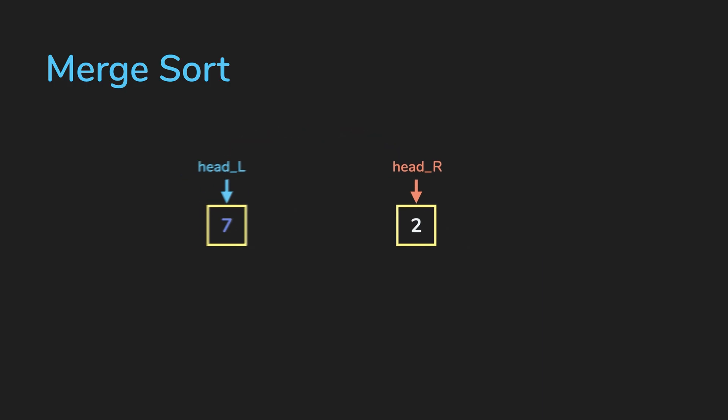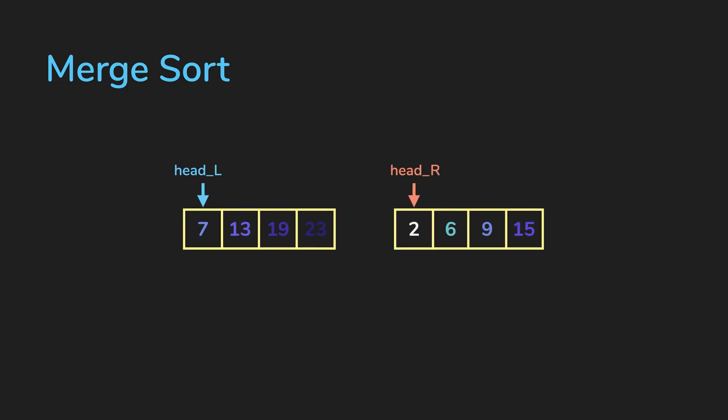And then we just compare these two elements and pull out the smaller one and put it in our merged array. So in our example, L is 7, 13, 19, and 23, and R is 2, 6, 9, 15, and they are both sorted.